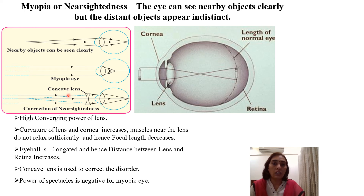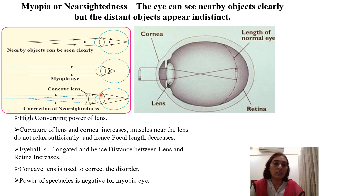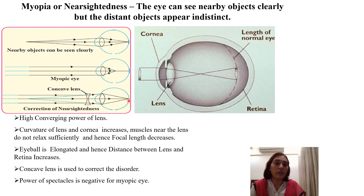For correction, since the converging power of the lens is too high, we need to slightly diverge the rays of light. To diverge rays, we use a concave lens, which is a diverging lens. Rays coming from a distant object fall onto the concave lens and slightly diverge. When drawing the diagram, this slight divergence must be shown, and then the required convergence is brought about by the eye lens so that the rays now meet on the retina. The correct focal length to see the distant object is achieved and the person can see clearly. A concave lens is used to correct this disorder.